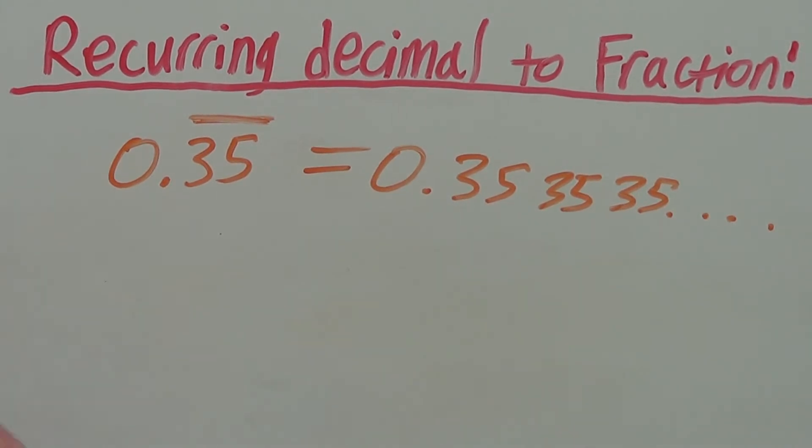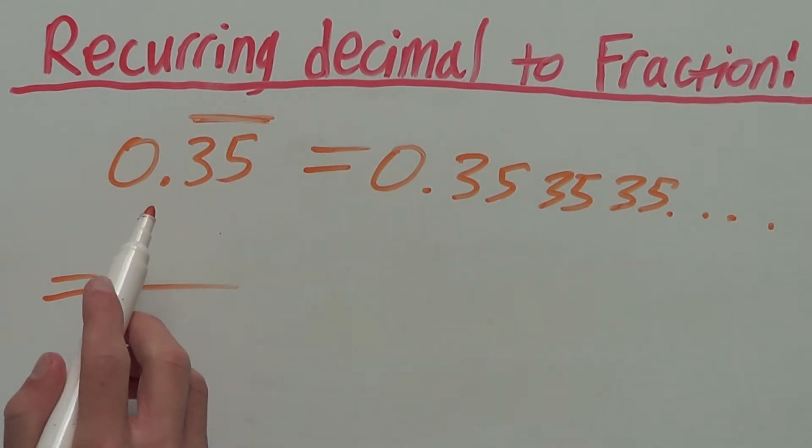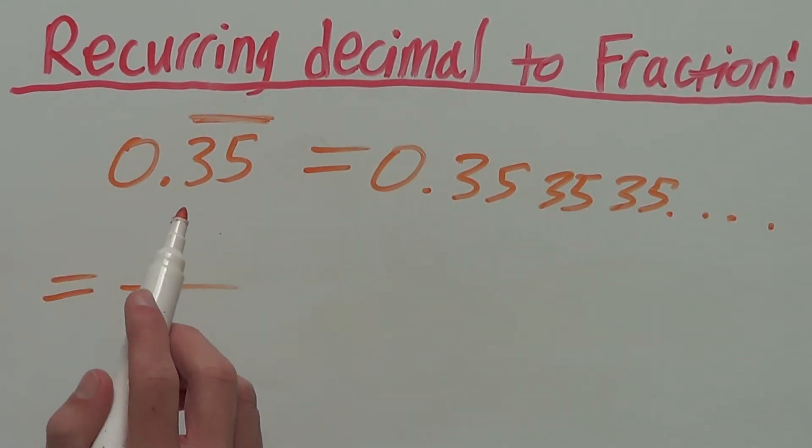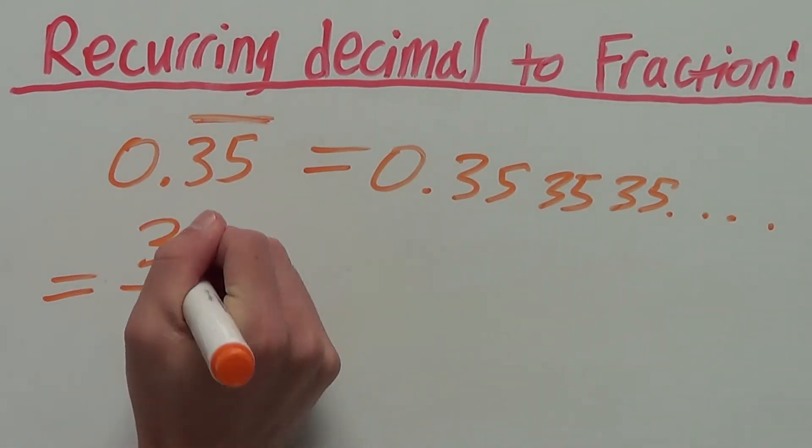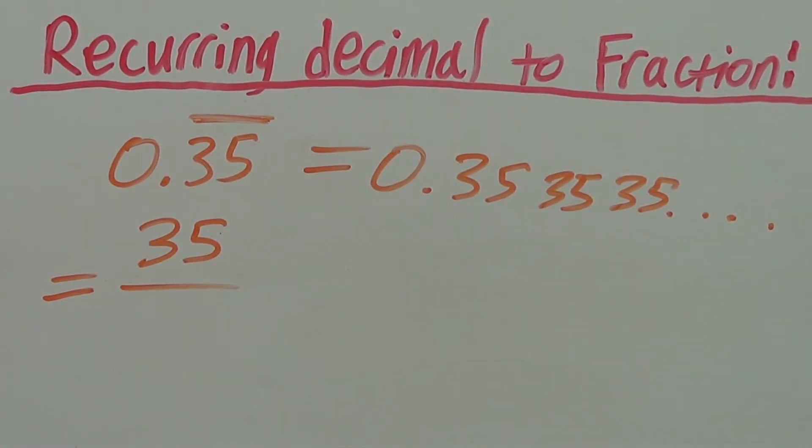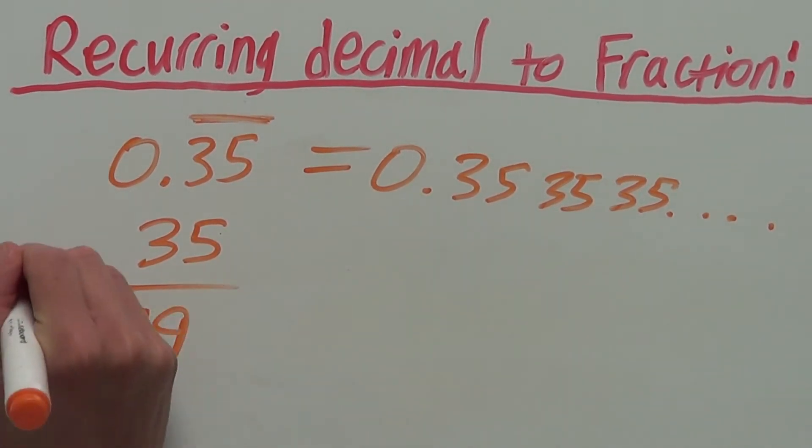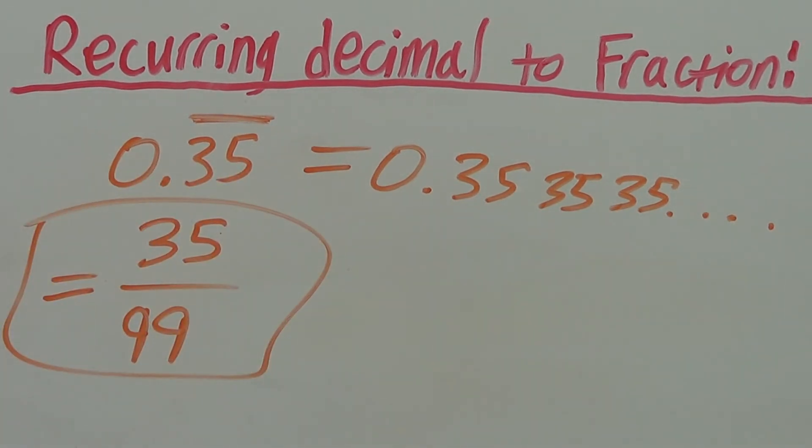To make this into a fraction, we put our recurring part on the numerator. So, the recurring numbers are 3 and 5. So, our numerator is 35. And since our denominator is always 9 and there's two numbers in our numerator, we have two 9's in the denominator. So, 0.35 recurring as a fraction is 35 over 99.